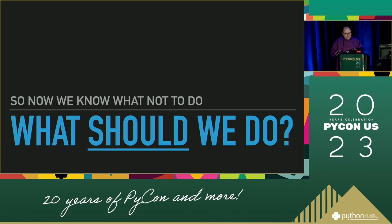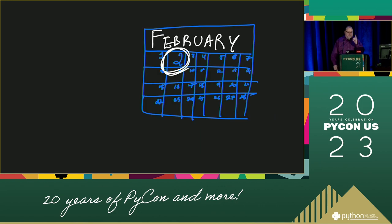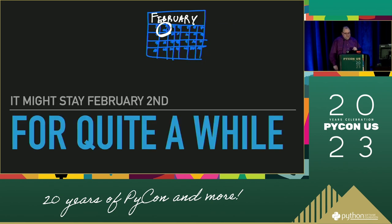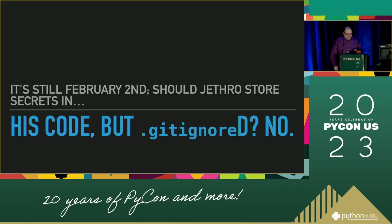But what should you do instead? Well, we're in the middle of a fable, and typically you find the lesson at the end of the fable, so let's rejoin our story. Jetro wakes up. He sticks his secret into his Dropbox folder instead, but when he fat-fingers a share link into a blog post one day, now it's public.